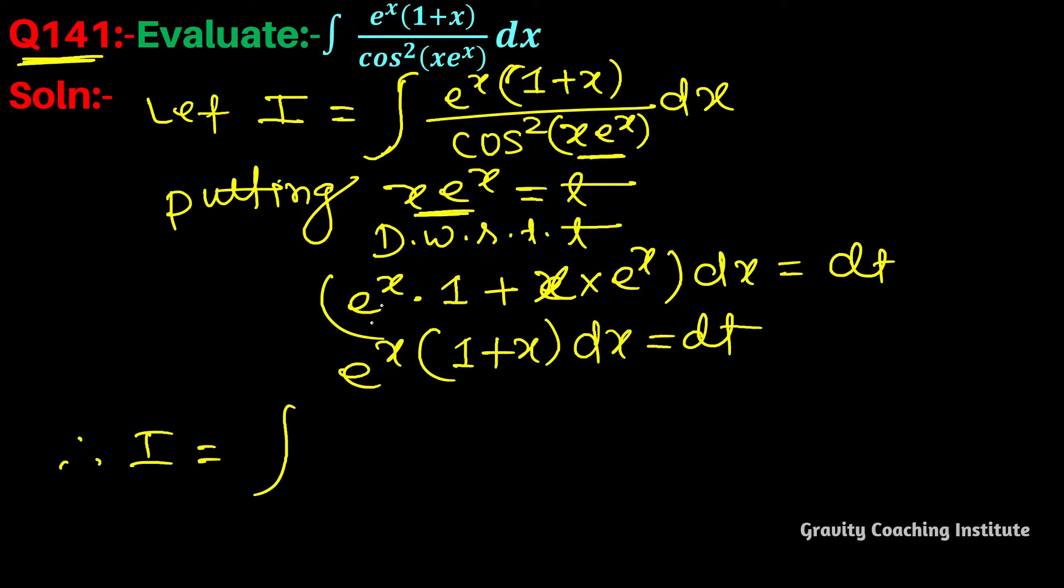We let x into e to the power x equal to t, so this is 1 upon cos square t. And e to the power x into 1 plus x dx, in place of that we'll have e to the power x into 1 plus x dx equal to dt.